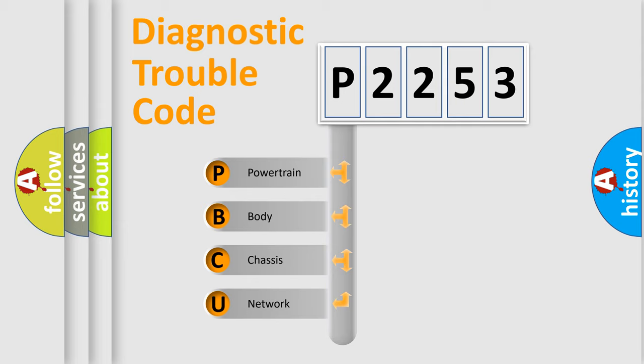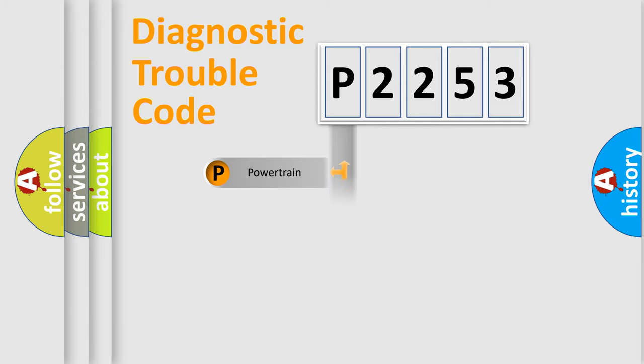We divide the electrical system of automobile into four basic units: Powertrain, Body, Chassis, Network. This distribution is defined in the first character code.